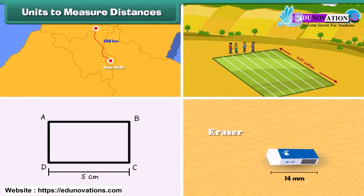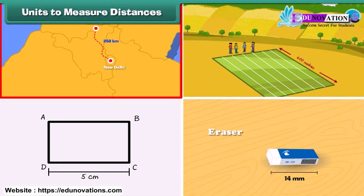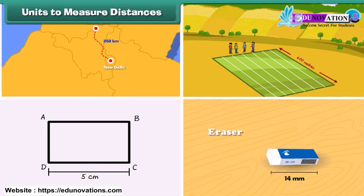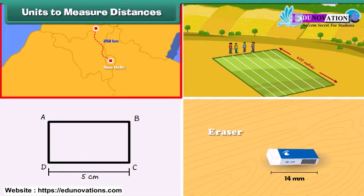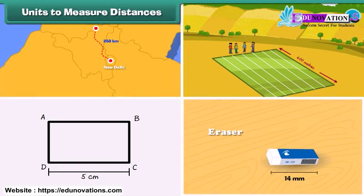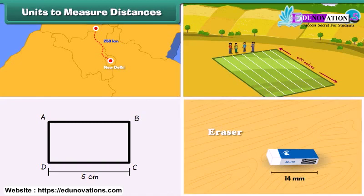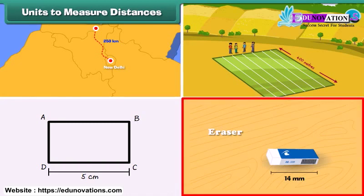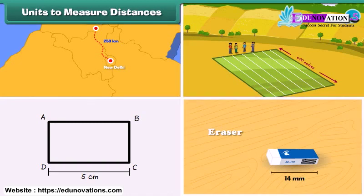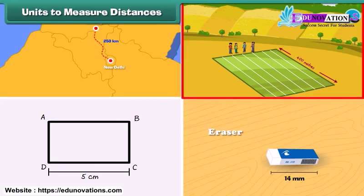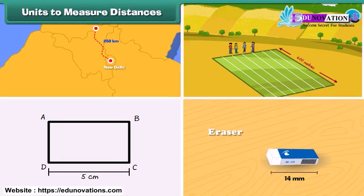Among these, kilometer is the biggest unit used for measuring long distances, while millimeter is the smallest unit used for measuring very small lengths. The standard unit of distance is meters.